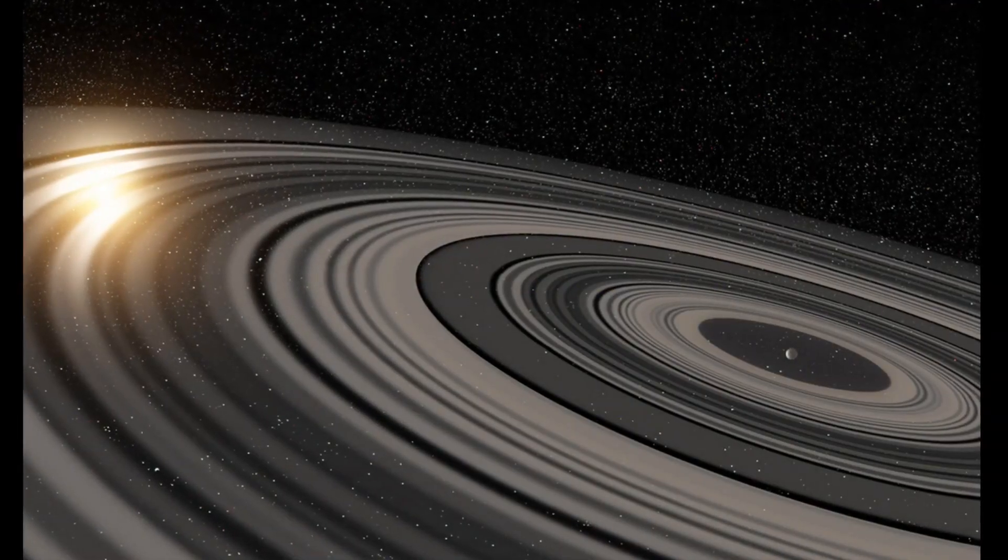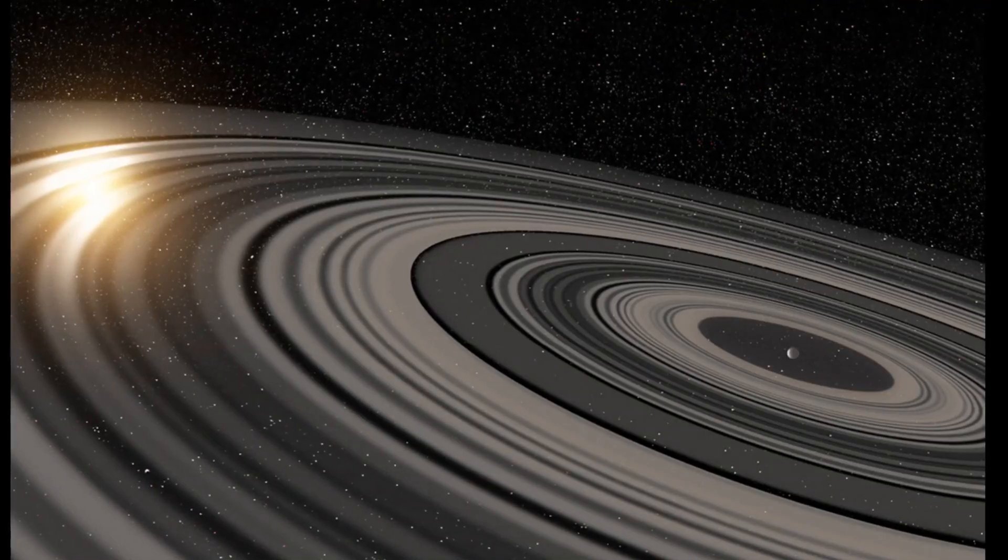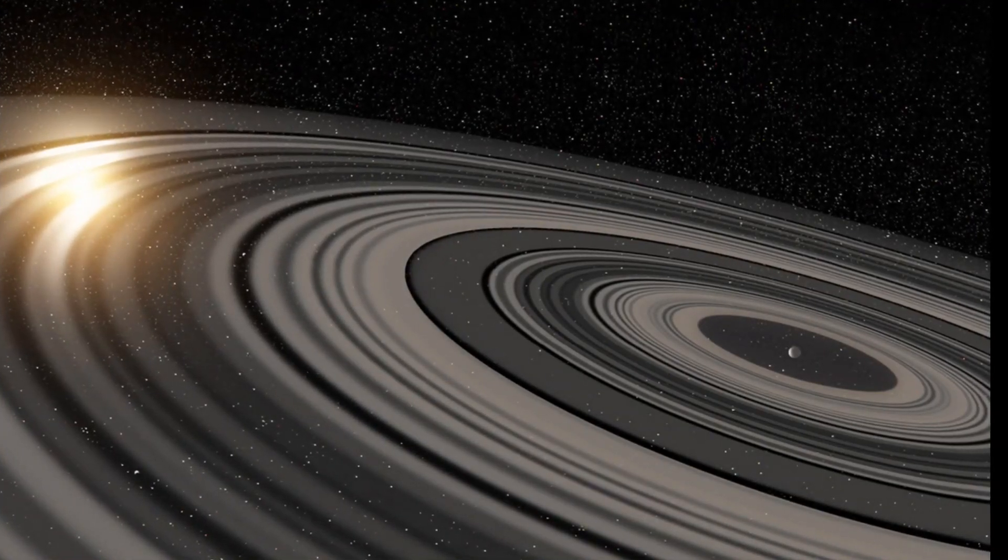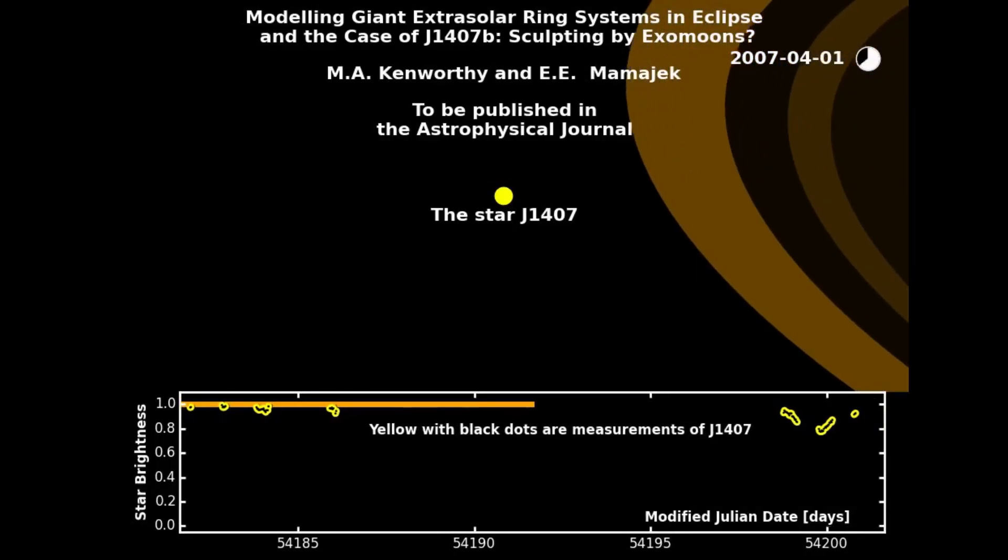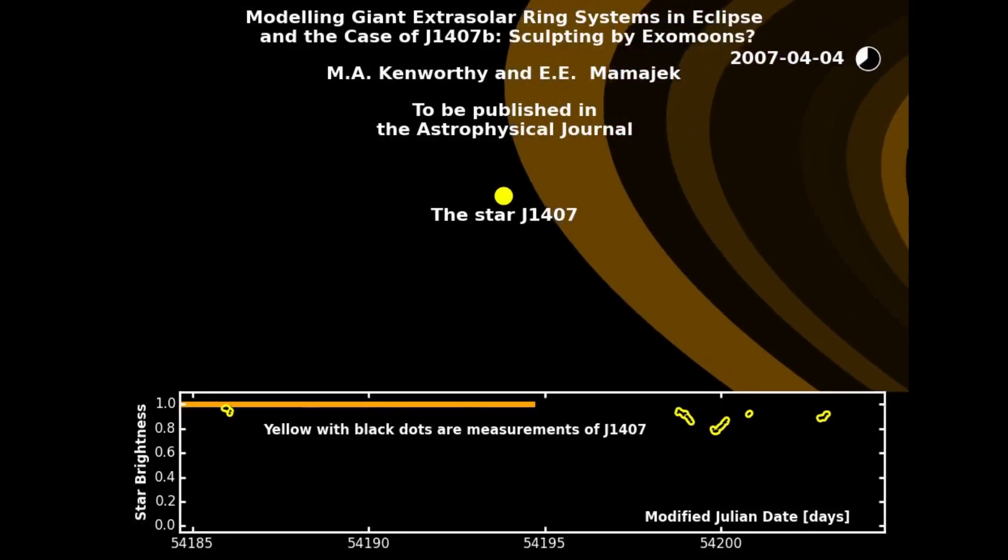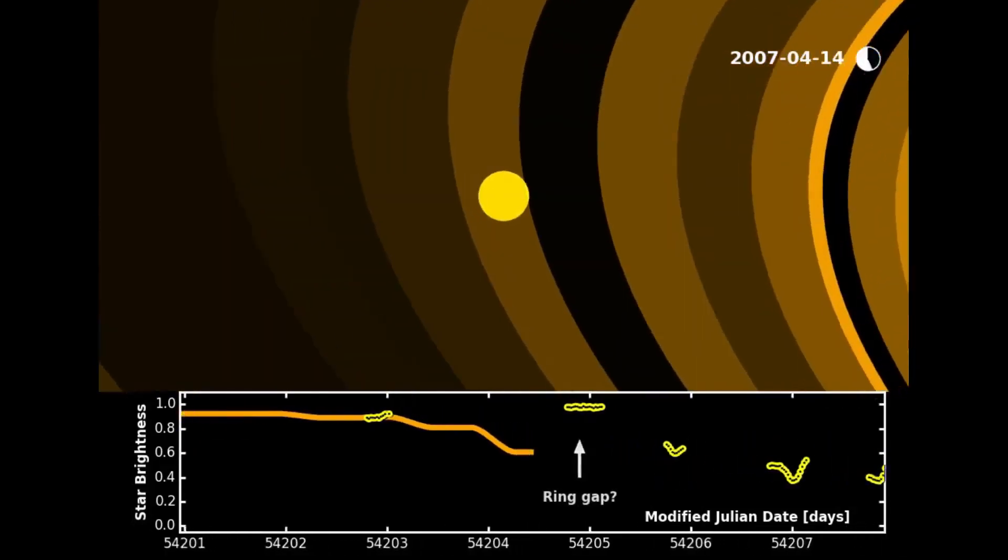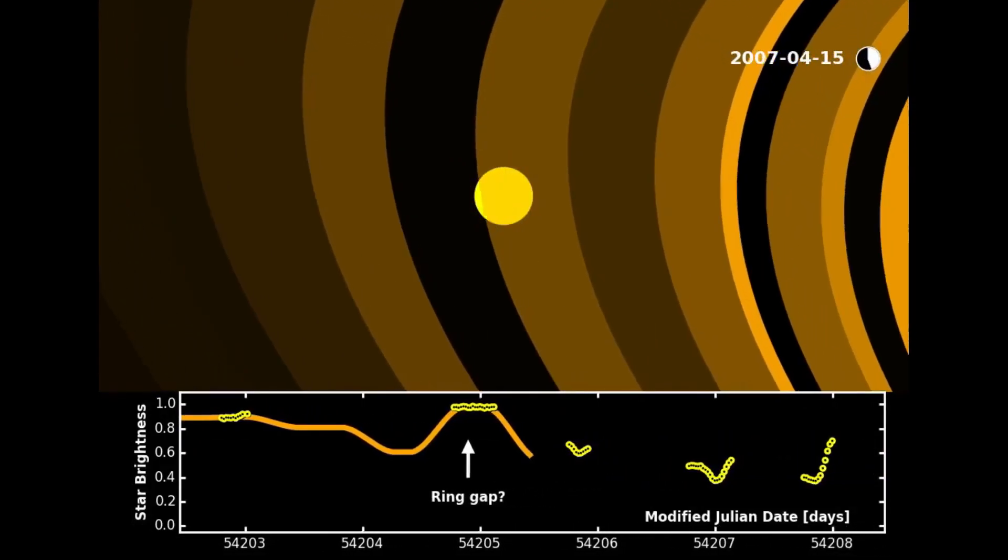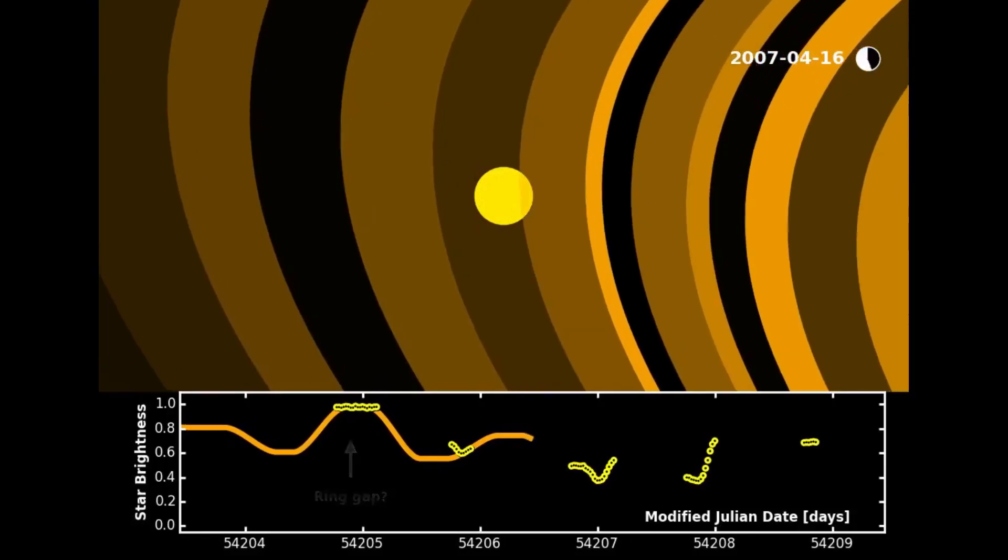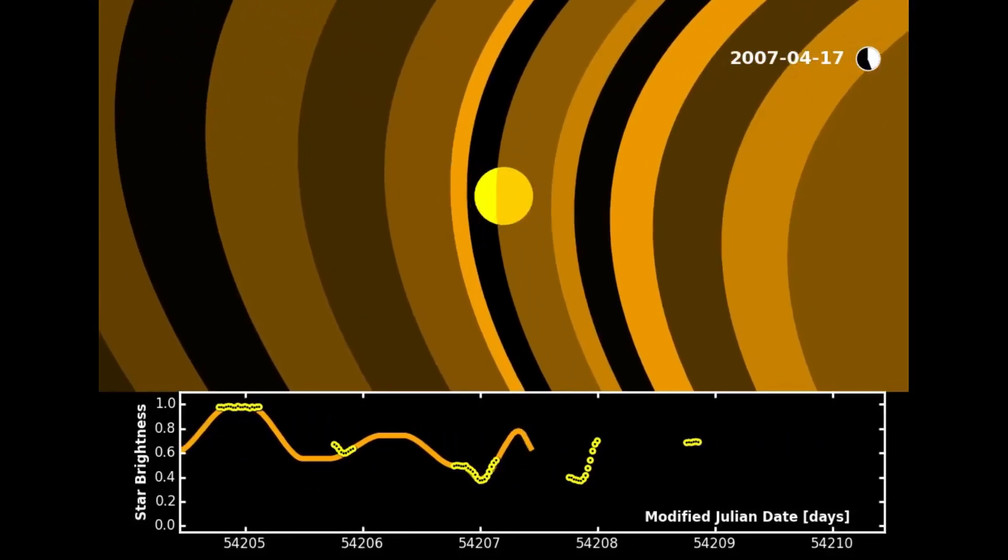This newly discovered alien planet's ring system puts Saturn's collection to shame. This discovery marks the first time researchers have found this kind of ring system outside the solar system. J1407b is much larger than Jupiter or Saturn and its ring system is roughly 200 times larger than Saturn's rings are today.